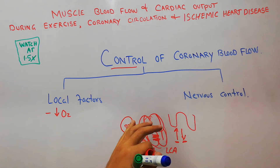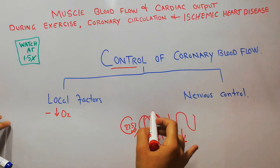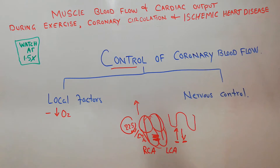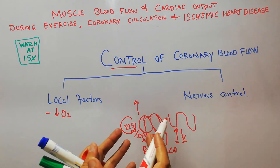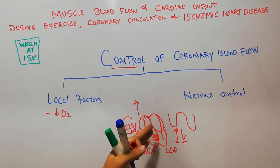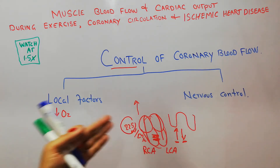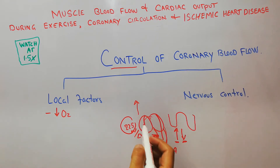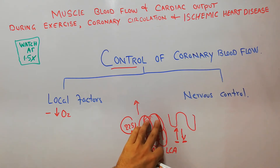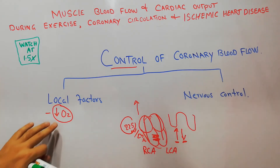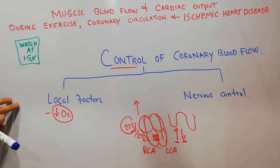Whenever the needs of the body increase — for example in exercise or due to increased metabolism — the heart has to pump more blood to fulfill those needs. The heart muscles also need more energy for increased contraction and rate. So when the heart starts contracting at a higher rate, the oxygen being supplied in the normal blood to the heart decreases.